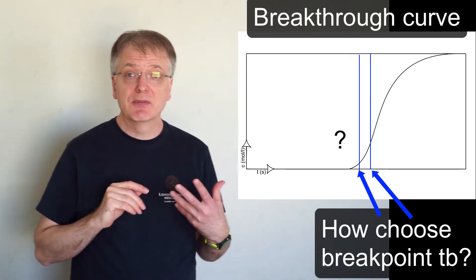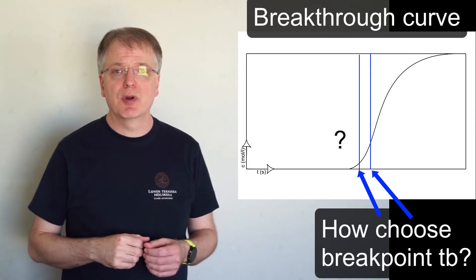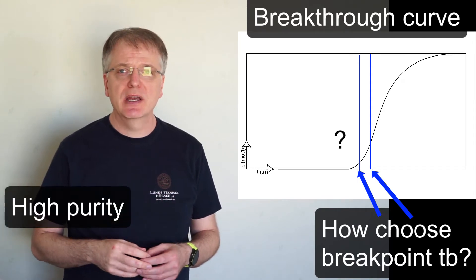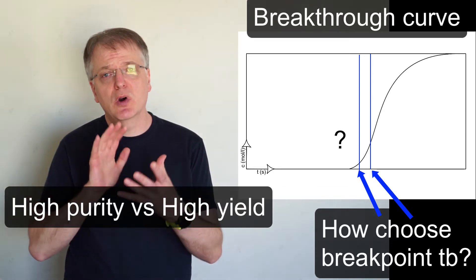Let us assume that we have a situation where it is the product that we adsorb. We want a high purity of our product, but we also want a high yield. At the same time, we want to have as small a column as possible.